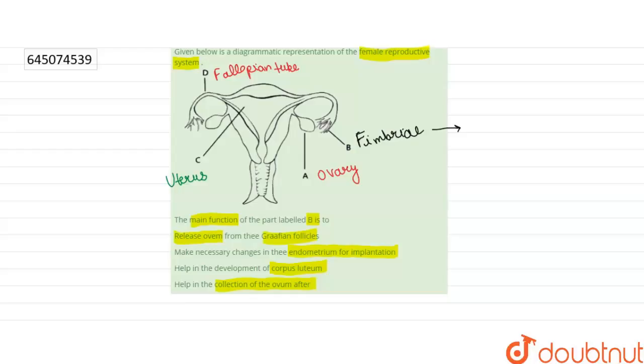They are present at the end of the fallopian tube. From the fimbriae, eggs move from the ovaries to the uterus.